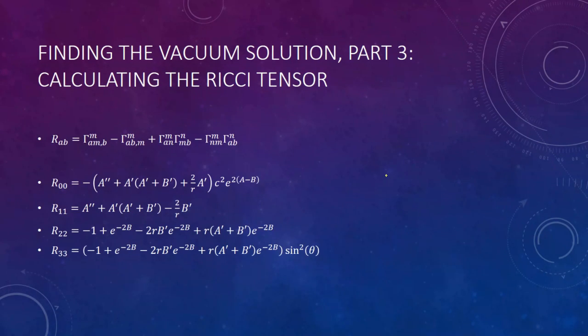Next you'll look at the Ricci tensor, which is found by using the Christoffel symbols. There are four non-zero elements of the Ricci tensor, and they are of this form.